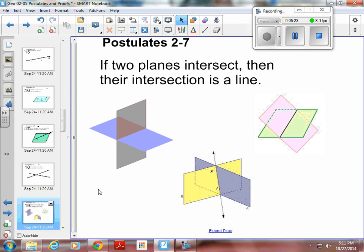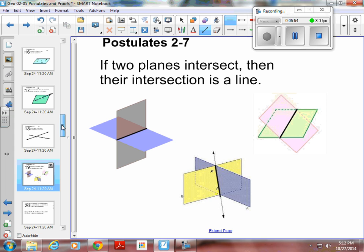And the last one for the section, if two planes intersect, then their intersection is a line. So hopefully you can see the line right through here, and I could actually draw it. There's a line right here where those two planes intersect. There's a line right here where those two planes intersect. There's a line right here where those two planes intersect. Okay, so two planes intersect at a line. It's a postulate. Again, these are all things that we accept as true. We don't have to prove them. We just accept them in the rules that we're going to play by. So those are our seven postulates to start out with.